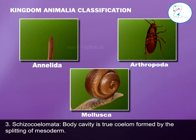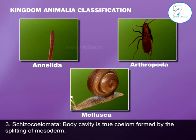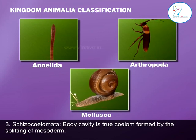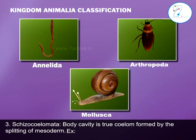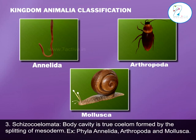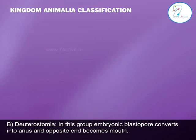3. Schizocoelomata: Body cavity is a true coelom, formed by the splitting of mesoderm. Examples: Phyla Annelida, Arthropoda, and Mollusca.